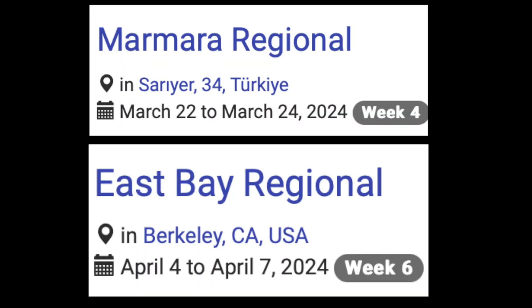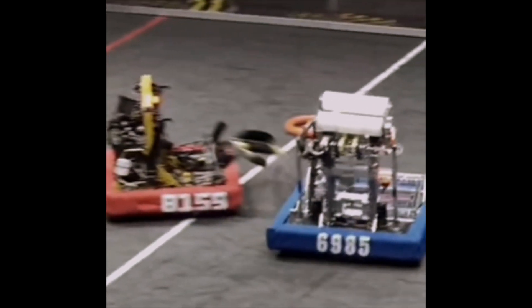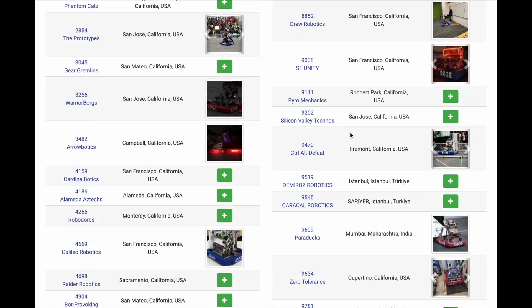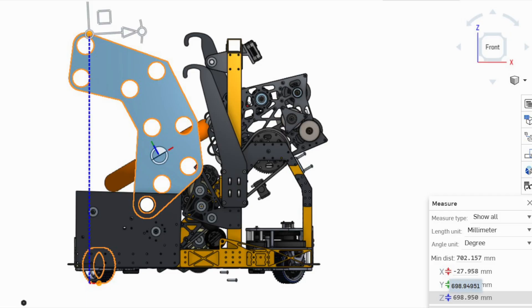With the East Bay Regional coming up in less than a week, we faced some problems. The current intake was too fragile and had no chance of surviving in East Bay, where robots are much more robust than those in Turkey. We opted for another complete redesign, creating an intake that would pick up the node and guide it all the way to the shooter without pivoting.